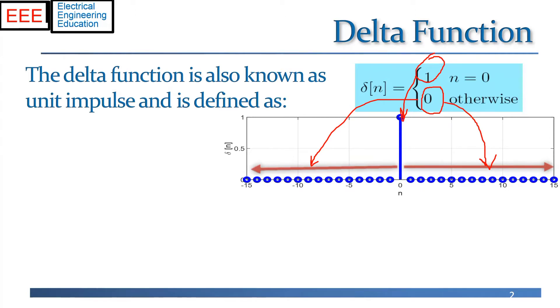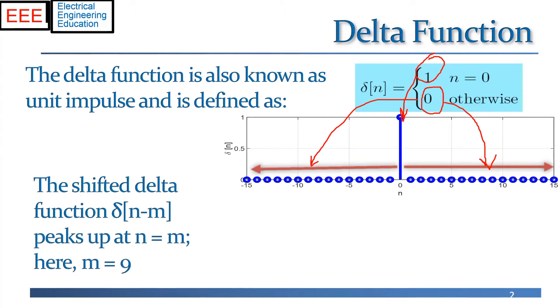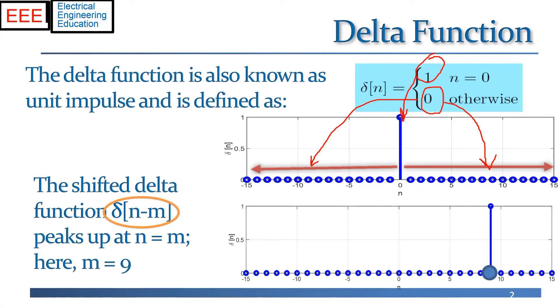Very handy signal, especially when we think of shifting it. So now, if we think of the shifted delta function, delta of n minus m where m is an integer, it is going to peak up at the time point n equals m. And the reason for that is, the delta function peaks up to a value of one when the argument inside the square brackets equals zero. So this shifted delta pulse will peak up when the argument inside, n minus m, equals zero, or precisely, when n equals m.